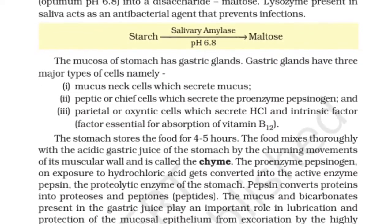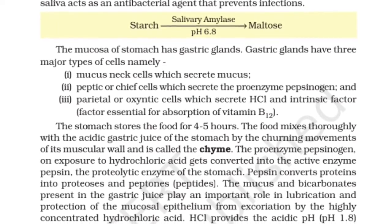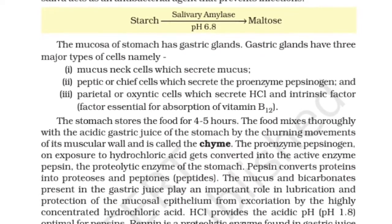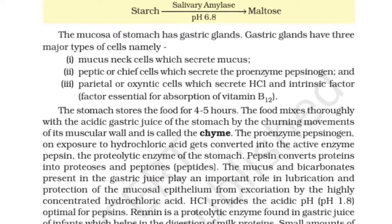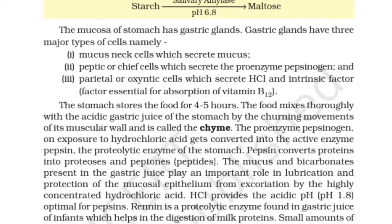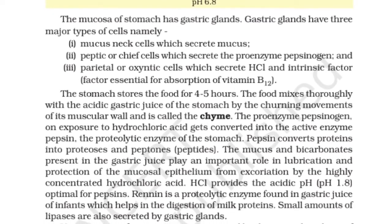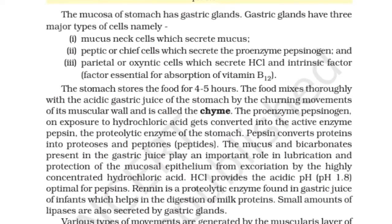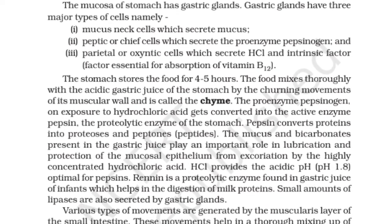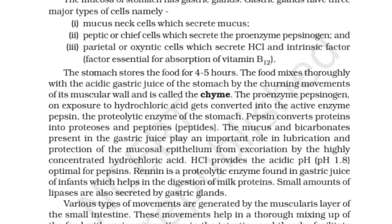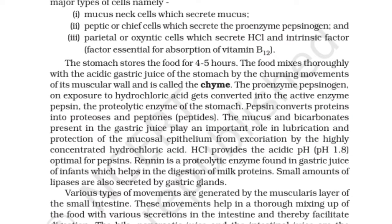The stomach stores food for 4 to 5 hours. The food mixes thoroughly with the acidic gastric juice of the stomach by the churning movements of its muscular wall, forming what is called chyme. The proenzyme pepsinogen, on exposure to hydrochloric acid, gets converted into the active proteolytic enzyme pepsin. Pepsin converts proteins into proteoses and peptones. Mucus and bicarbonates in gastric juice protect the mucosal epithelium from excoriation by concentrated HCl. HCl provides the acidic pH of 1.8, optimal for pepsin.